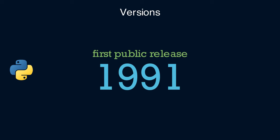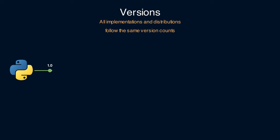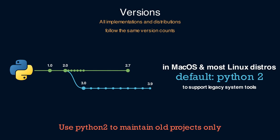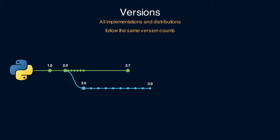Python was first released to the public in 1991. Version 2 was released in 2000 and version 3 in 2008. For some time they were updating Python under two version branches — Python 2 and Python 3. Eventually Python 2 development stopped at 2.7, and now we have Python 3 only. 2.7 versions are still available and may already be on your computer, but they are not recommended anymore.